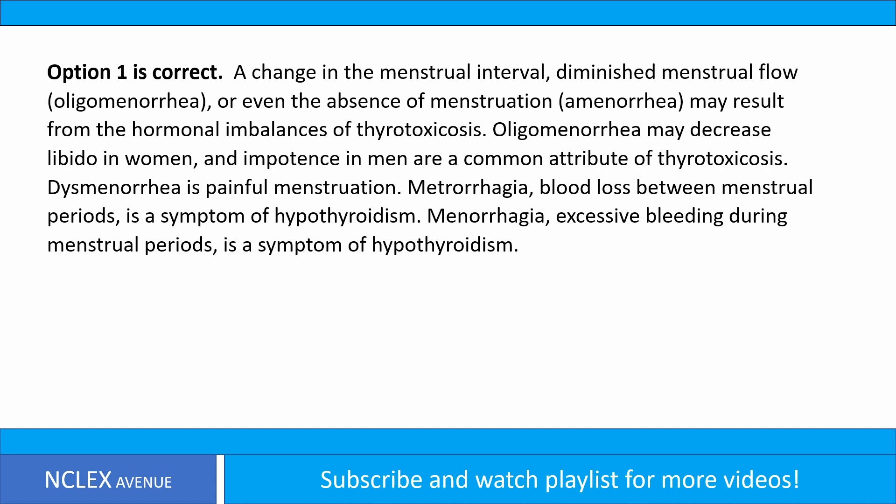Dysmenorrhea is painful menstruation. Metrorrhagia — blood loss between menstrual periods — is a symptom of hypothyroidism. Menorrhagia — excessive bleeding during menstrual periods — is also a symptom of hypothyroidism.